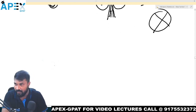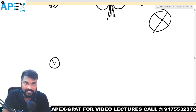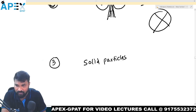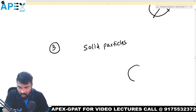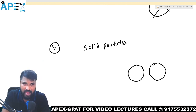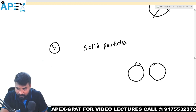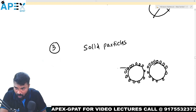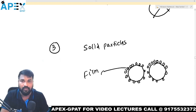The third approach is solid particles. We add some solid particles. These solid particles do some wetting of both oil and water. After that, they absorb around the oil globule. When they absorb around the oil globule, they form a film.